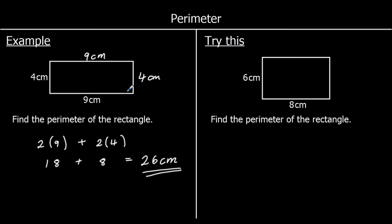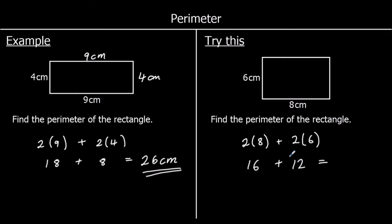And one for you to try, so give it a go. It's another perimeter of a rectangle. We've got two eights and two sixes. Two eights are 16. Two sixes are 12. And 16 plus 12 is 28. So we've got 28 centimeters — the distance all the way around the edge of the shape is 28 centimeters.